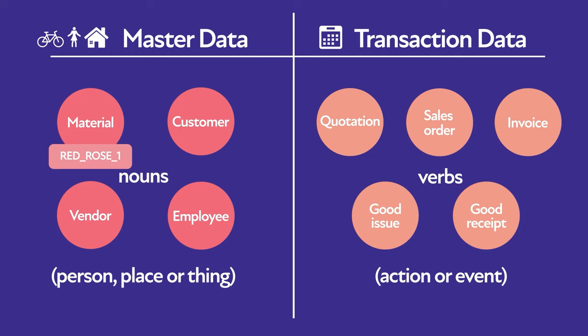The situation is completely different with transaction data. Transaction data are business documents created using master data, like sales orders and invoices — we've seen one example from McDonald's. Transaction data relates to day-to-day transactions, so it's normal to create a lot of them. Transaction data is not constant and can change quite often. For example, the status of a sales order can change several times during the selling process.